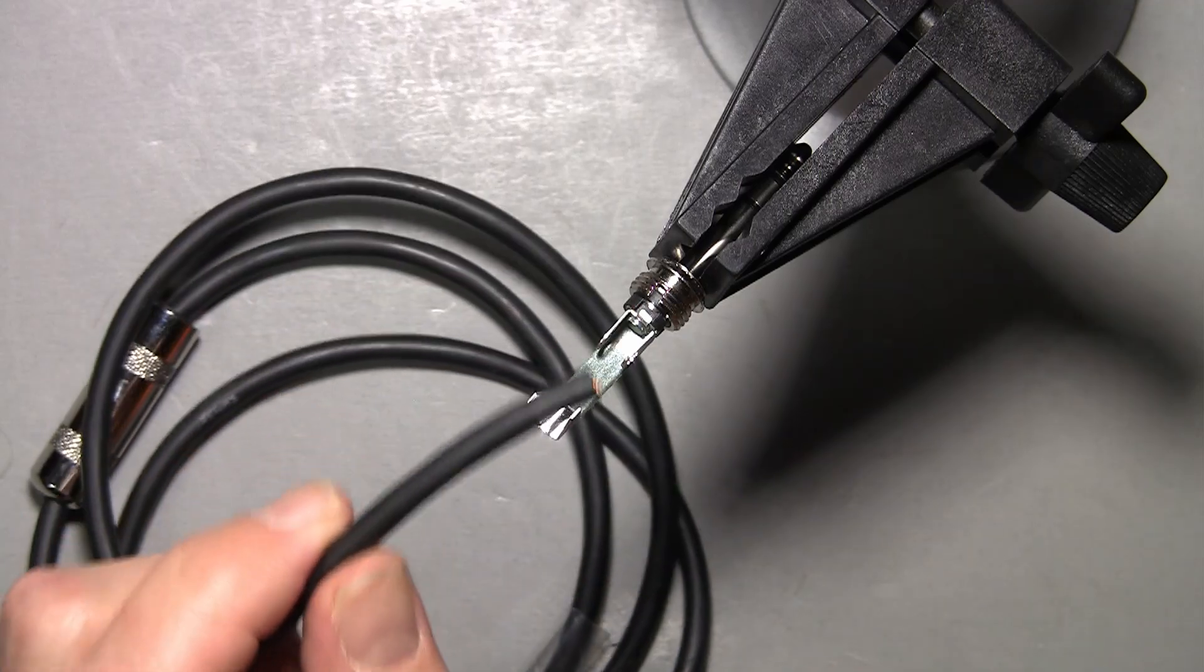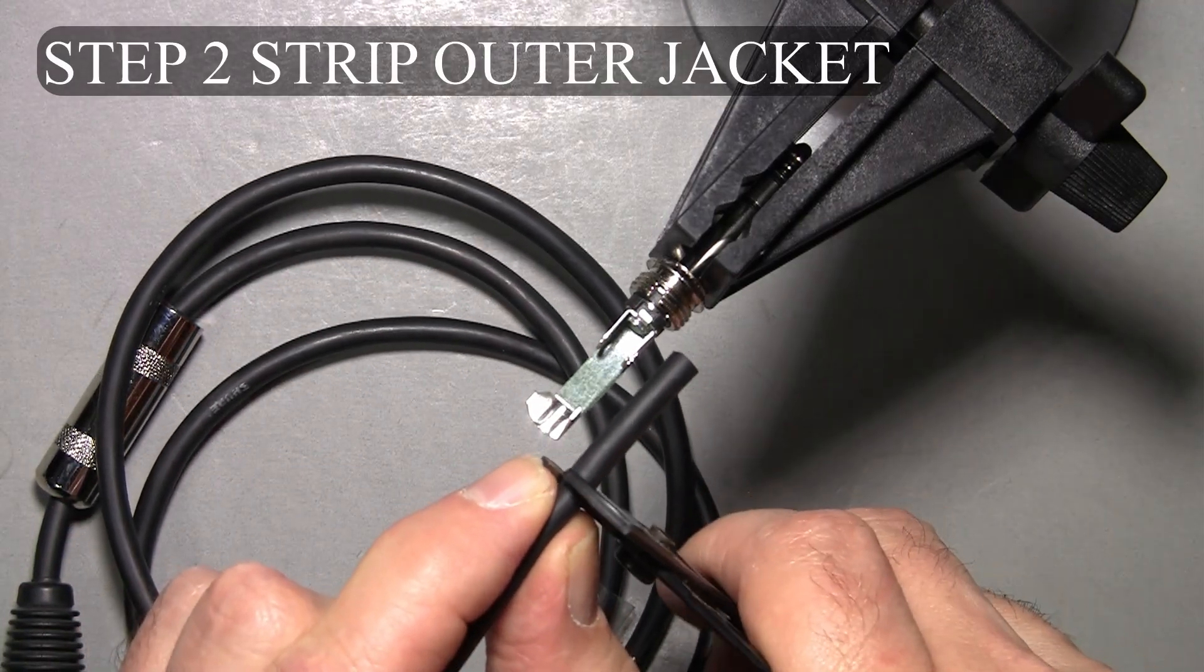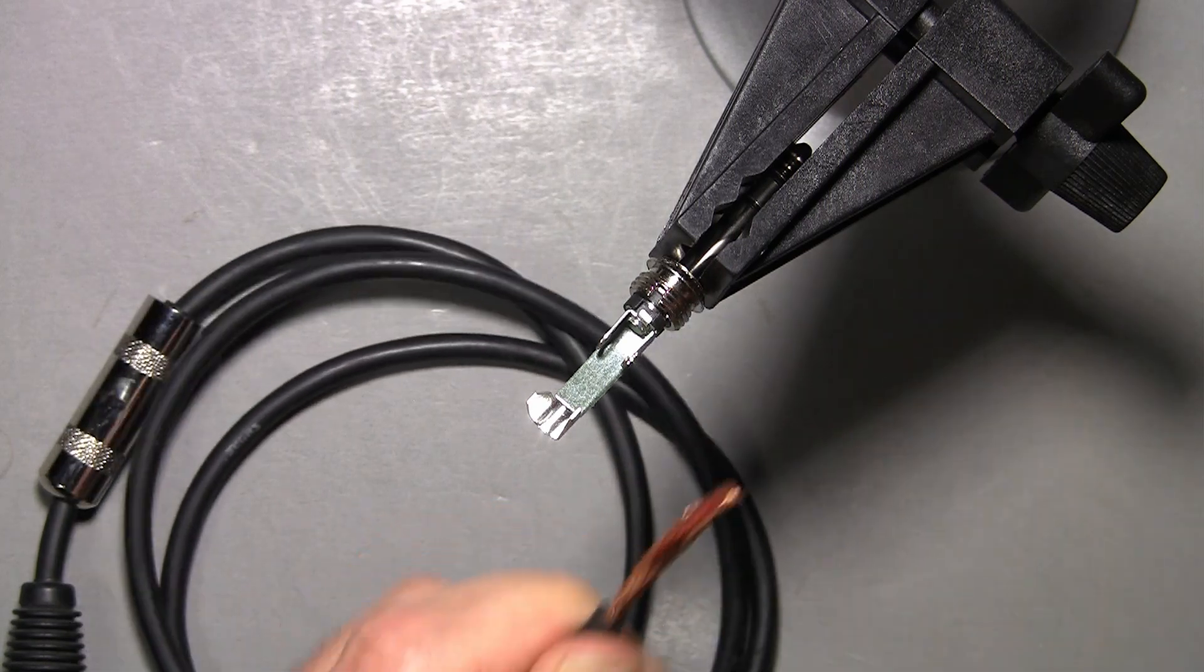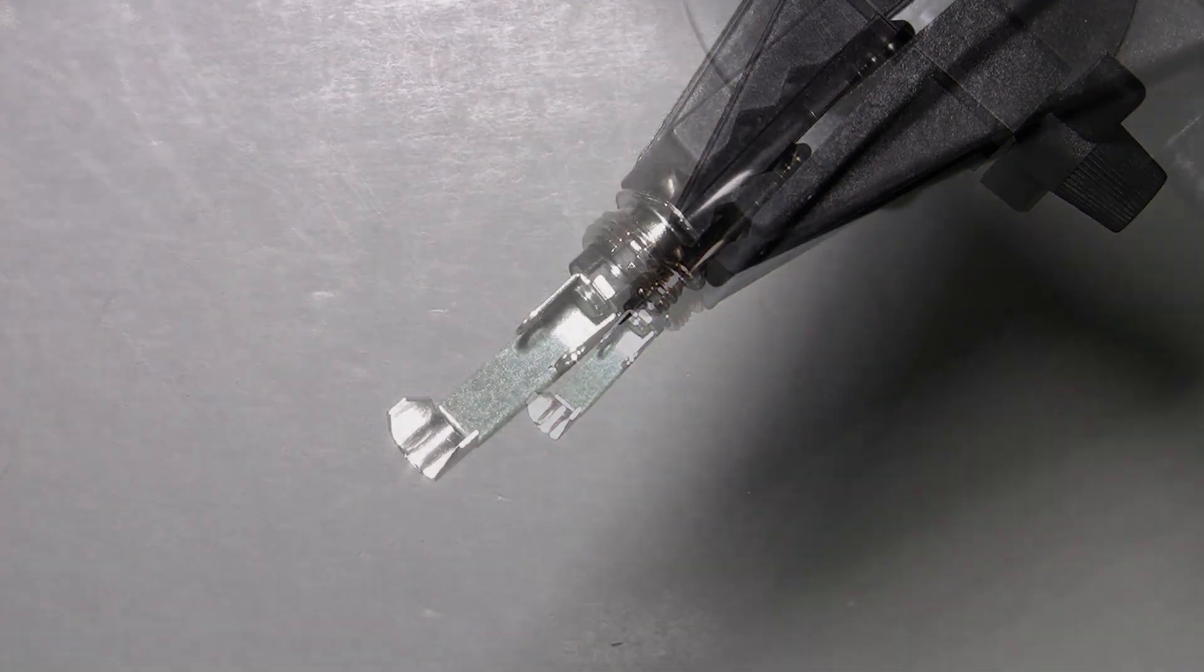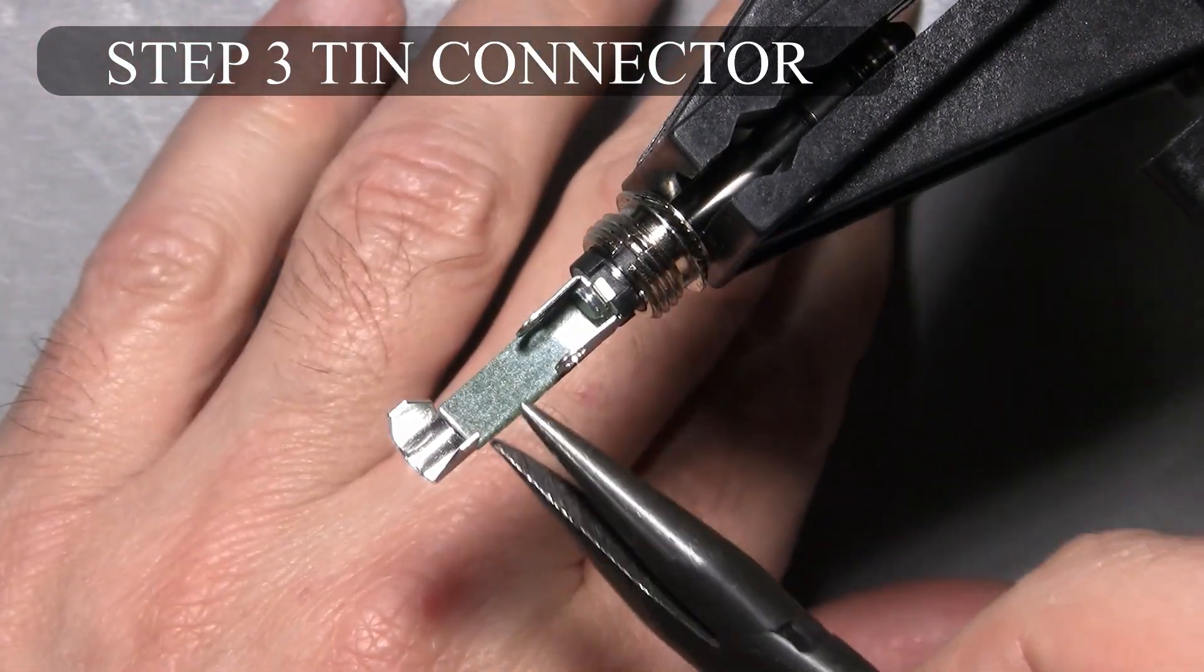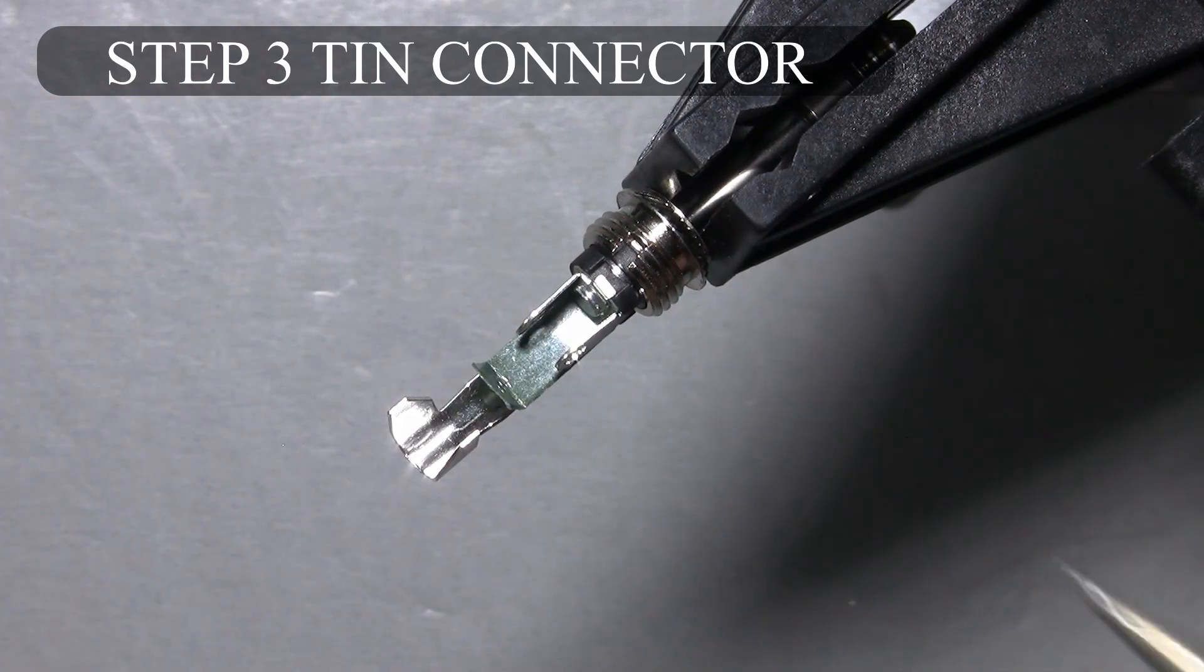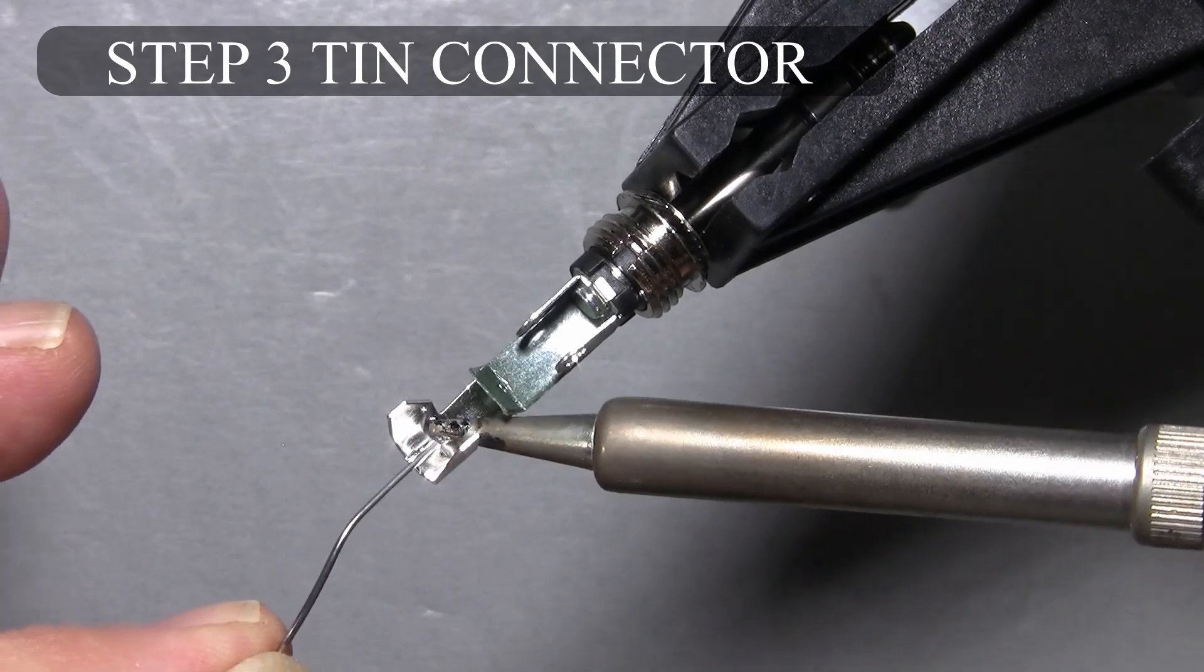Alright, the first step is to strip the wire. I like to cut it slightly long. Okay, first I'm going to tin the connector. What I'd like to do is flip up that piece of insulation. Put a nice bit of solder in the connector.